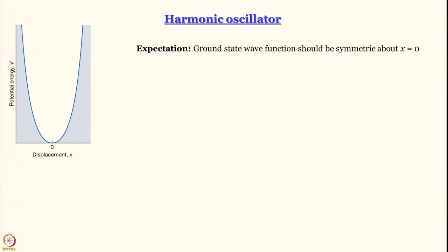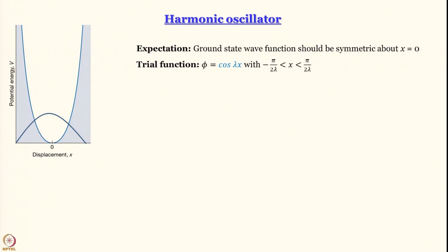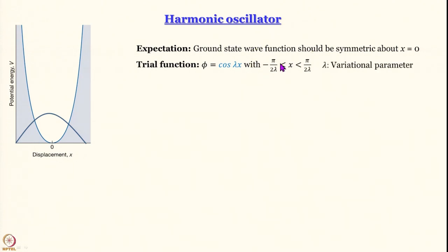We choose a cosine function because the value of cos(x) at x = 0 is 1, and as you go towards plus or minus x the values fall — giving us a symmetric shape. We take this symmetric cosine function as our initial guess: φ = cos(λx), and set the limits to x between −π/(2λ) and +π/(2λ). Here λ is the variational parameter.